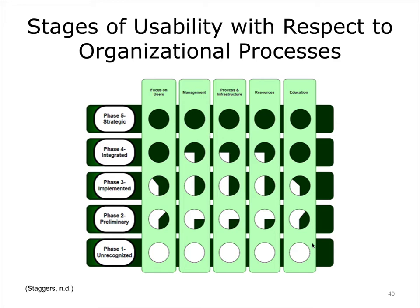In the unrecognized phase, none of these has any focus on usability. As an organization enters the preliminary phase, the focus on users and education has increased with little attention to the other three aspects. In the implemented phase, users and education may be two-thirds complete, and management, process, and resources are half allocated. In the integrated phase, user focus and education is complete, but management, processes, infrastructure, and resources may not be fully committed. Finally, in the strategic phase, all five aspects are fully functional.